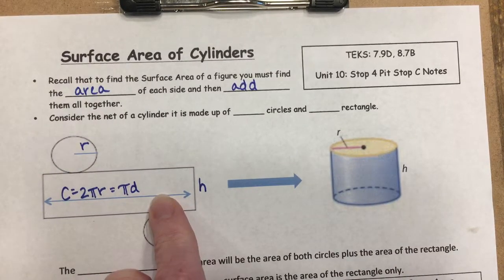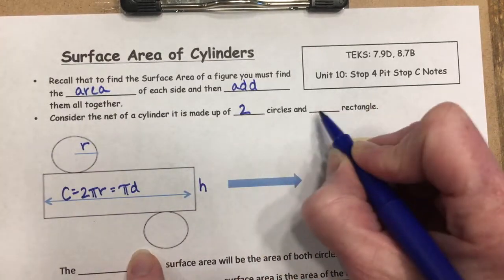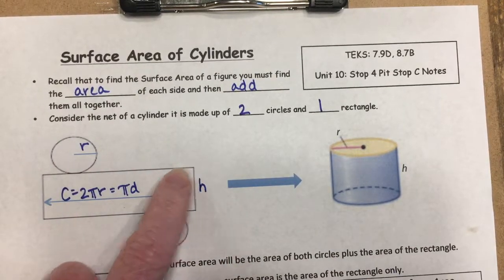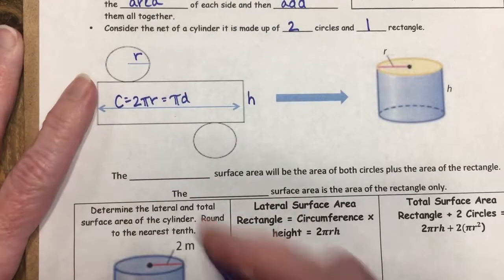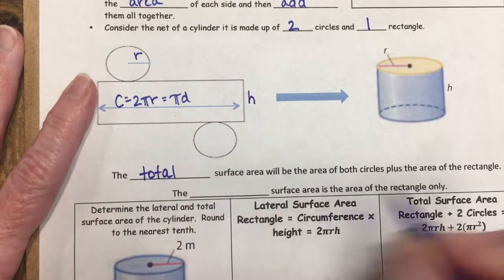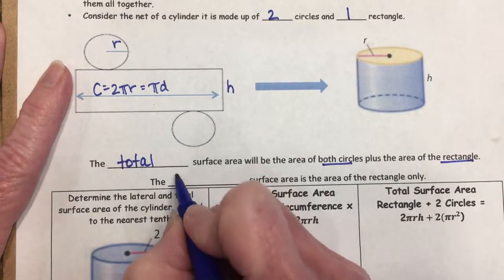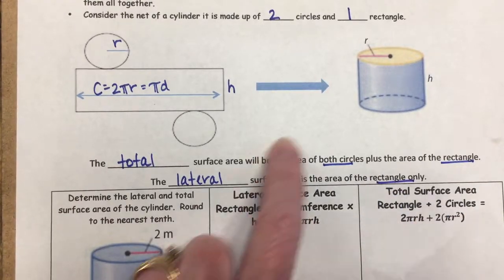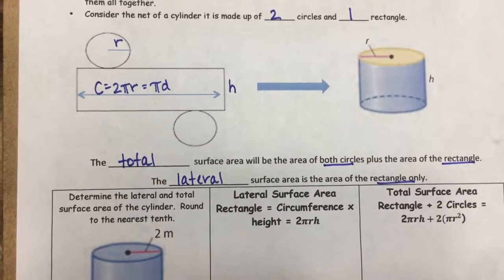When finding the surface area of a cylinder, you have two circles and one rectangle. The rectangle's area is found by multiplying the height of the cylinder by the circumference of the circle. There are two types: total surface area, which includes both circles plus the rectangle, and lateral surface area, which is the rectangle only — just the side that goes around the cylinder.